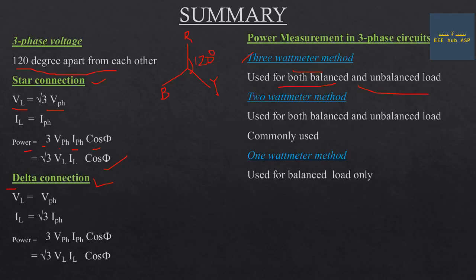In delta connection, V_L equals V_phase. The 2-watt meter method is used for both balanced and unbalanced loads. The 1-watt meter method is used only for balanced loads.